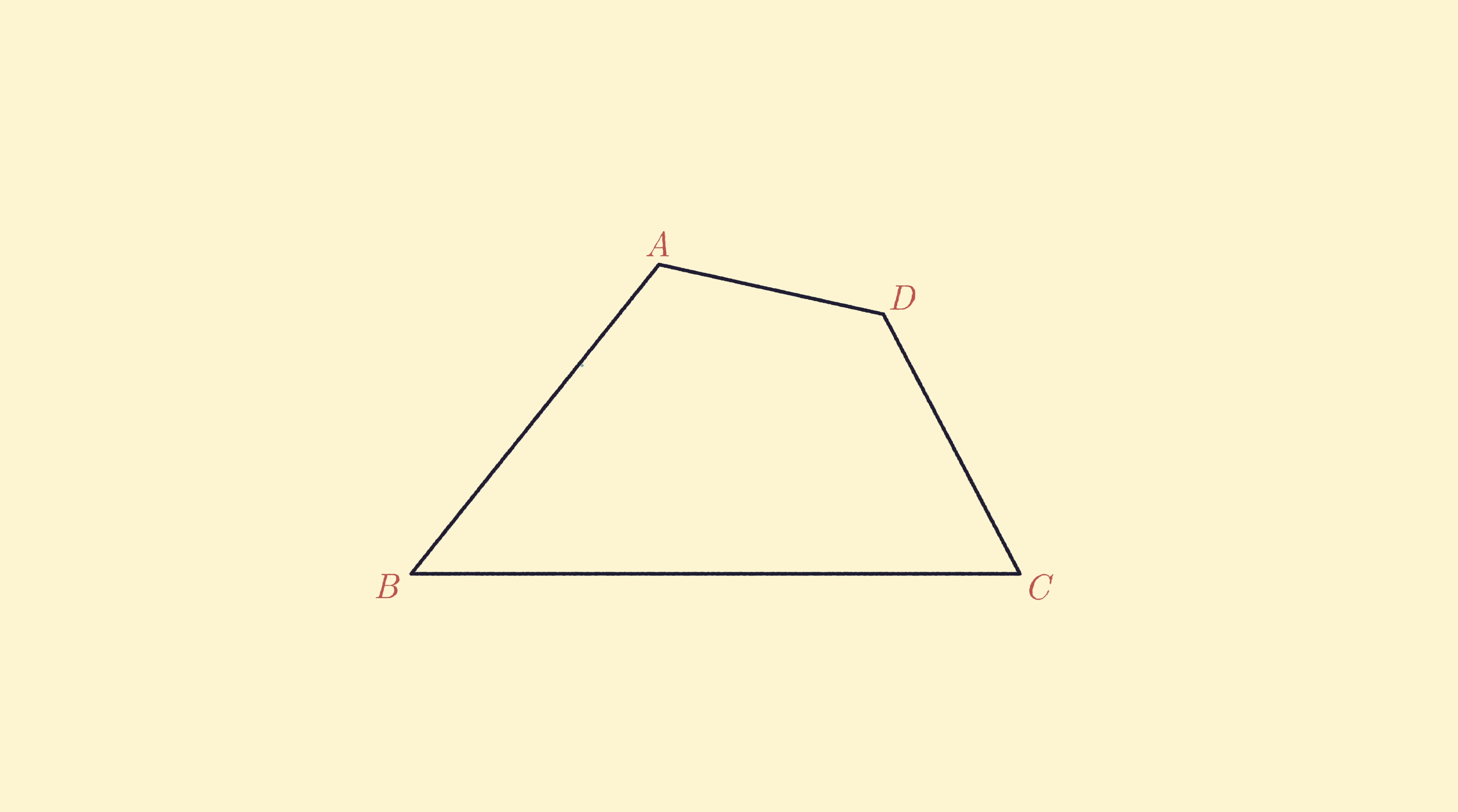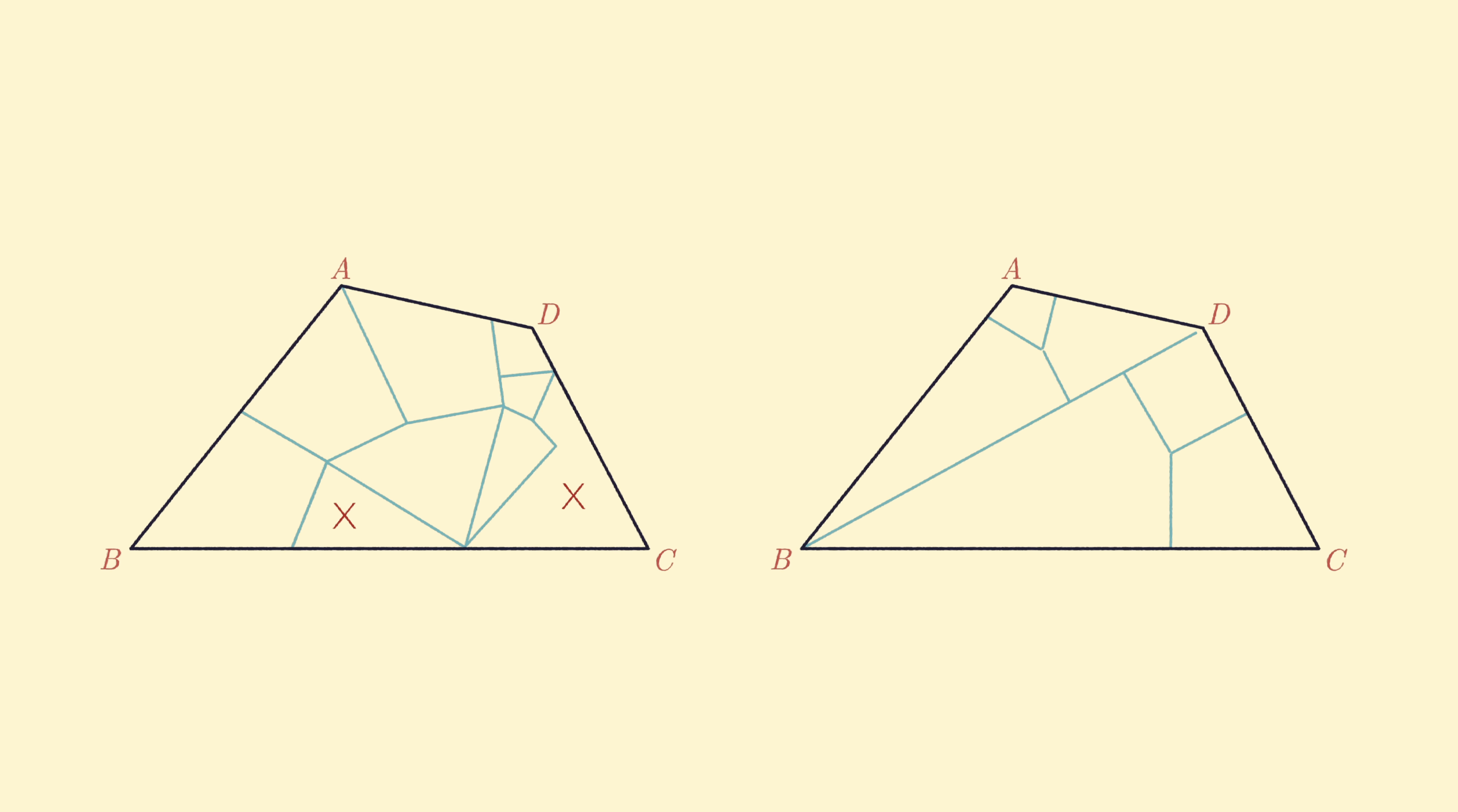Now, this problem seems fiddly at first. If we just go through arbitrarily making cuts, more often than not we'll end up with seven kites and some leftover area, or we might not even get seven kites at all.